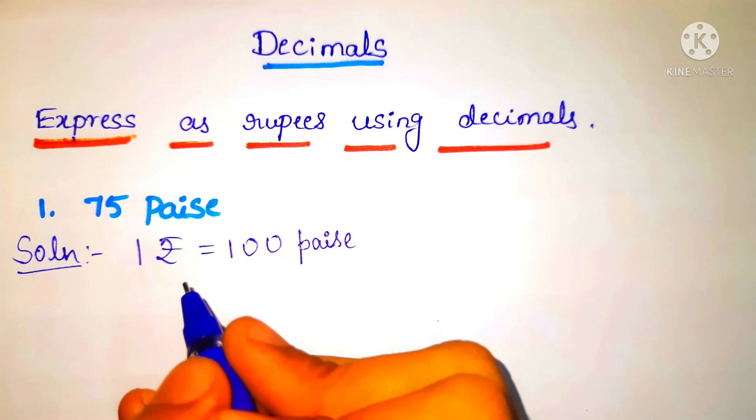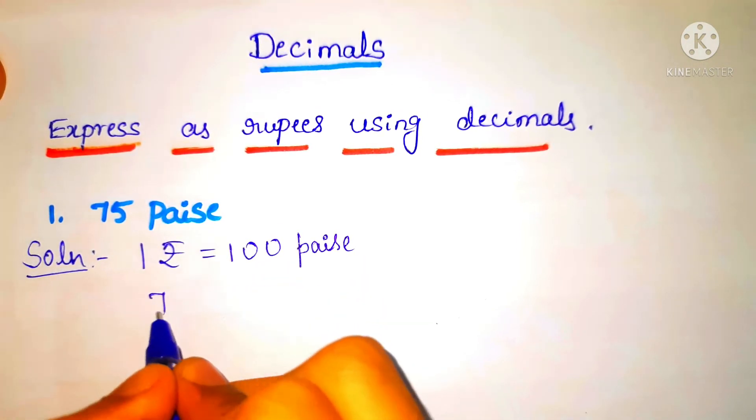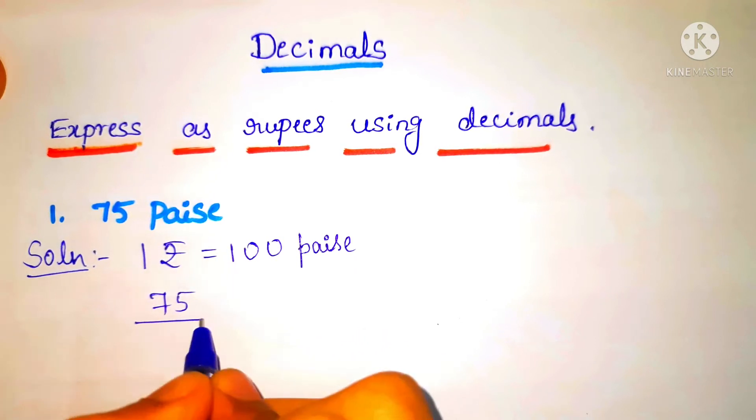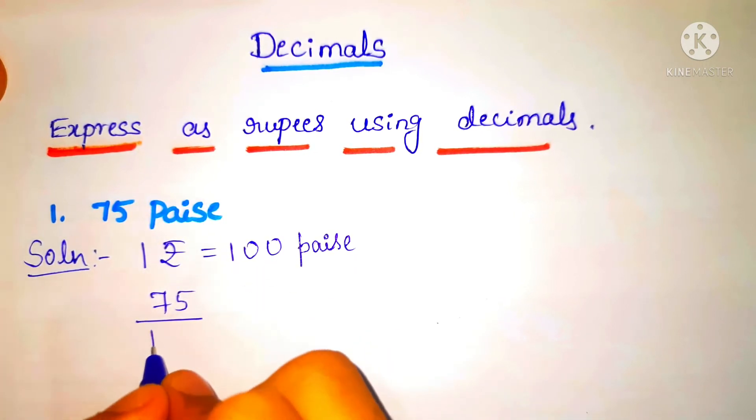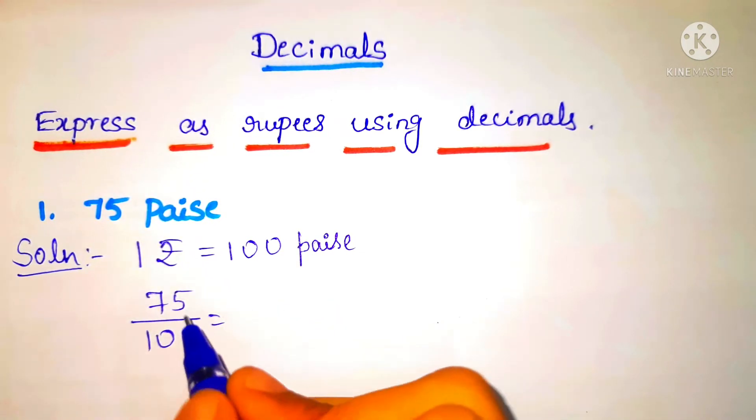We have to see this rule and follow the solution. We have to write 75 in the numerator and 100 in the denominator. So it is written as 75 by 100.